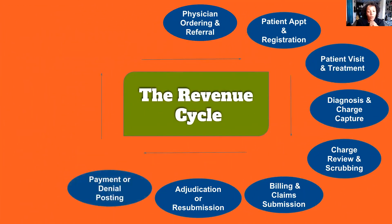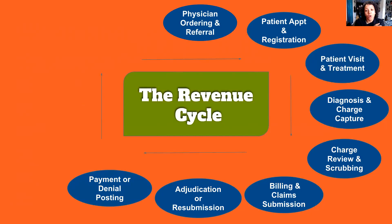So after an insurance company has accepted your claim and either paid it or denied it, if they've decided that the patient's benefits do not allow, you would receive an Explanation of Benefits, an Explanation of Payment, or an Explanation of Remittance. All these shorthand terms just mean it's going to be an explanation of what the insurance company's decision is.